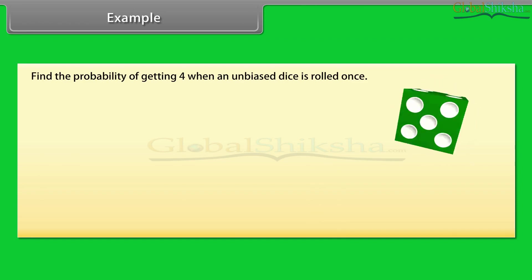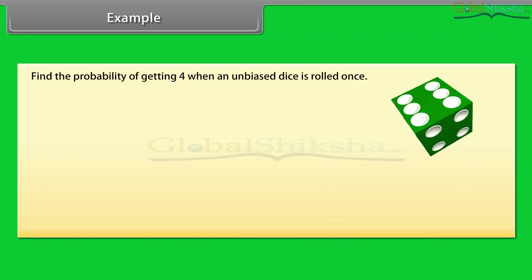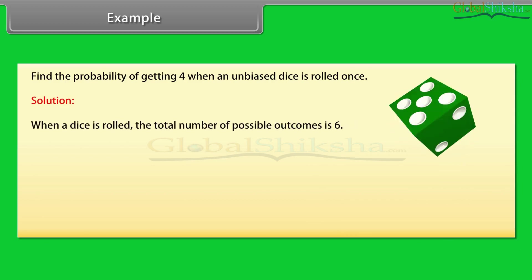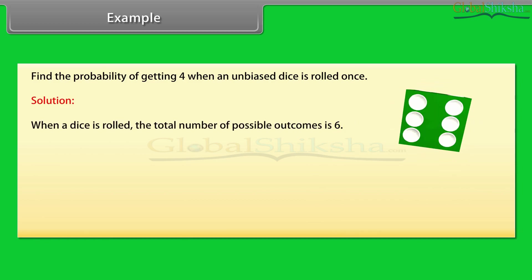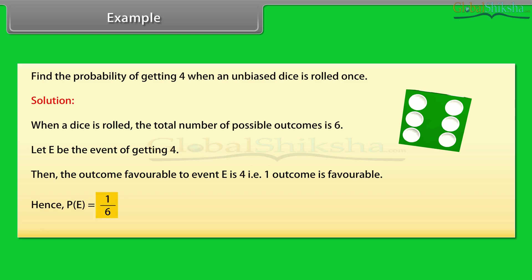Example: Find the probability of getting four when an unbiased dice is rolled once. Solution: When a dice is rolled, the total number of possible outcomes is six. Let E be the event of getting four. Then the outcome favorable to event E is four — that is, one outcome is favorable. Hence, probability of event E is equal to 1 upon 6.